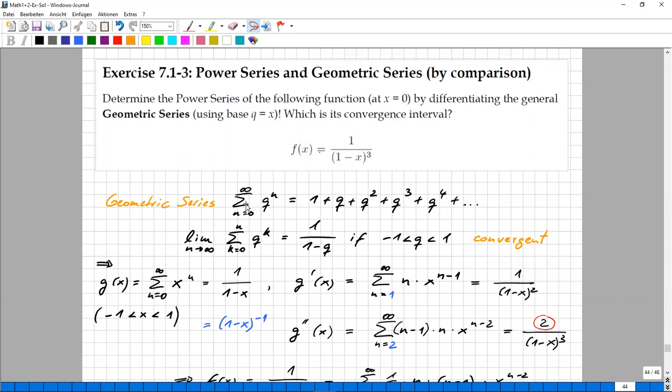This is the geometric series. It contains the summation of the powers of a given constant q, so q power n, summed up from n equals zero up to infinity. Starting with the neutral exponent zero, q to the power of zero is always one. As long as q is not equal to zero. So it's one, plus q, plus q squared, plus q cubed, plus q to the power of four, and so on.